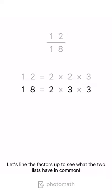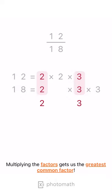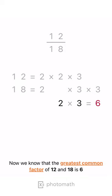Let's line the factors up to see what the two lists have in common. Now, copy the common factors. Multiplying the factors gets us the greatest common factor. Now we know that the greatest common factor of 12 and 18 is 6.